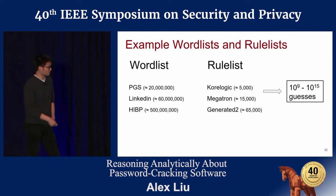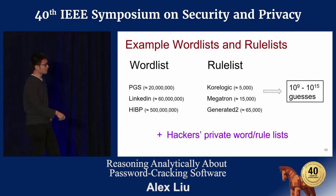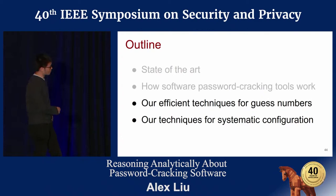The lists researchers use are just a starting point. Evidence has shown that hackers have private wordlists and rules that are likely much better than what we have. Right now, without investing huge resources, it's impossible for researchers to catch up with what hackers have — but fortunately, we make it possible. Now I'm going to tell you how we do this.